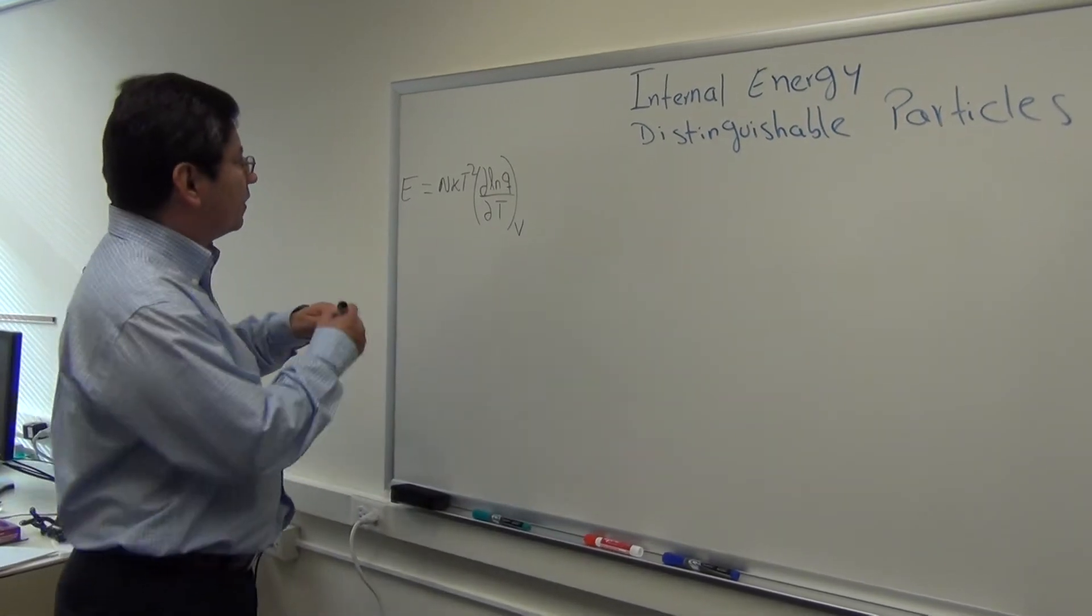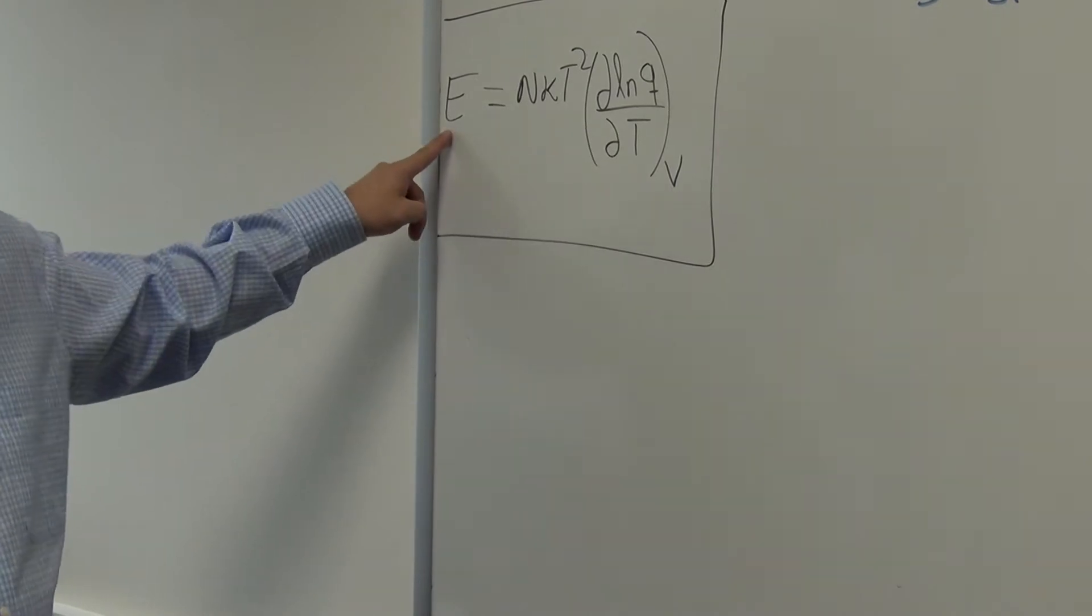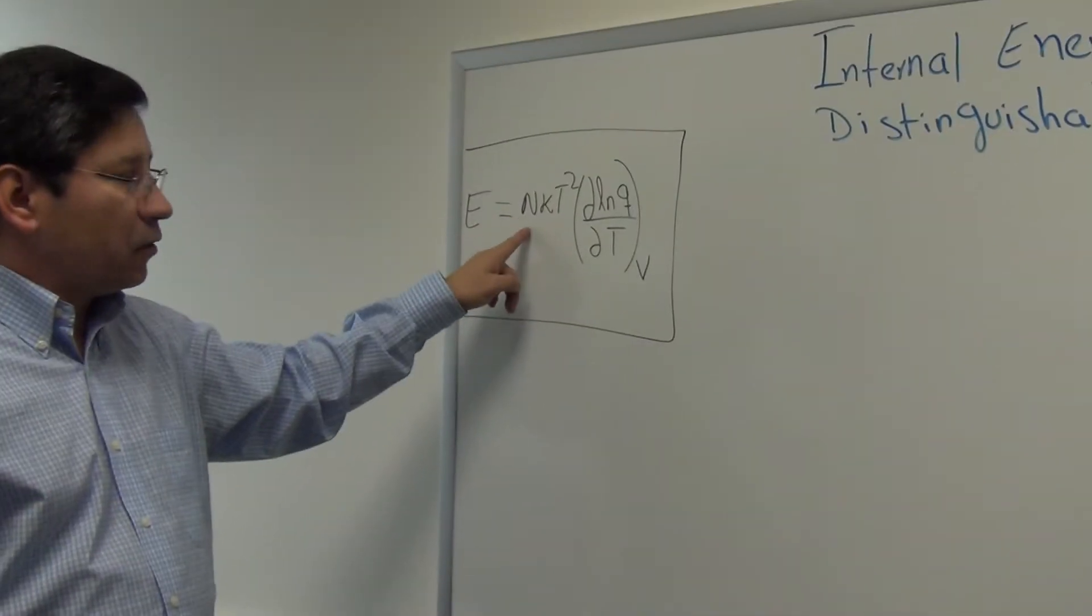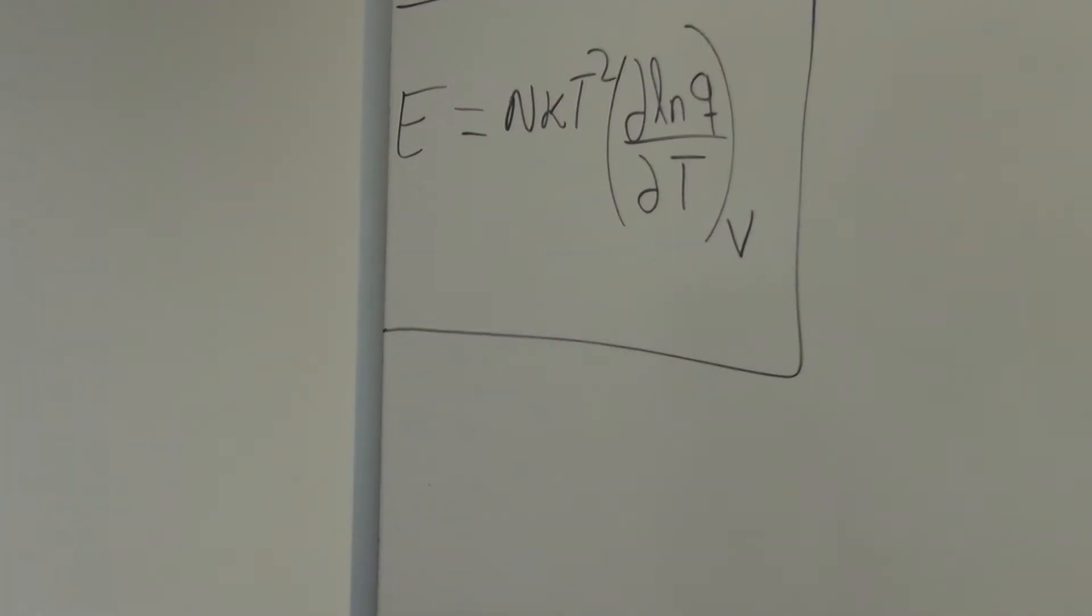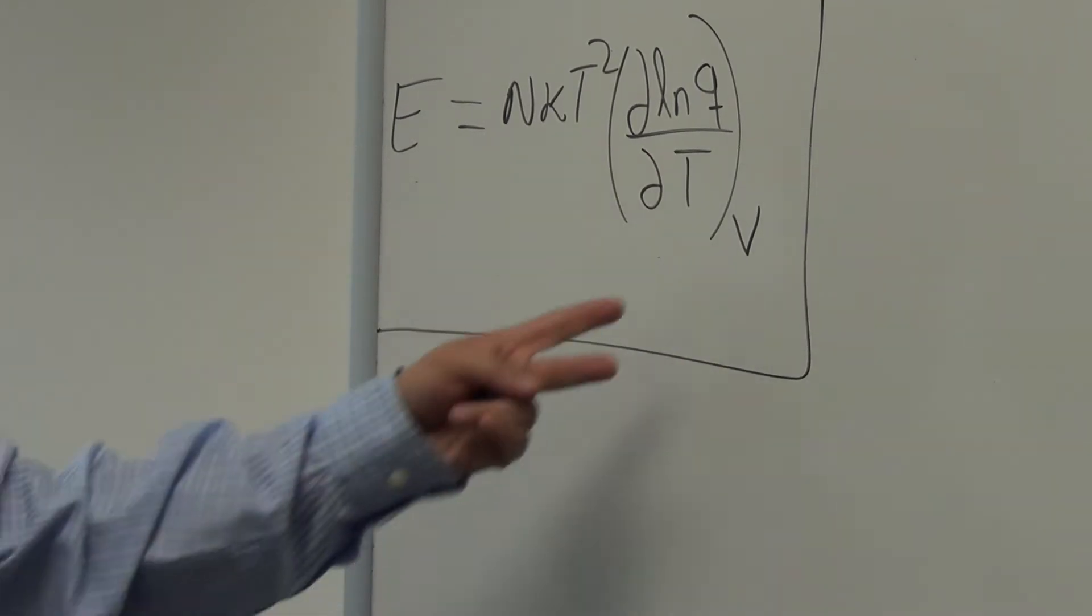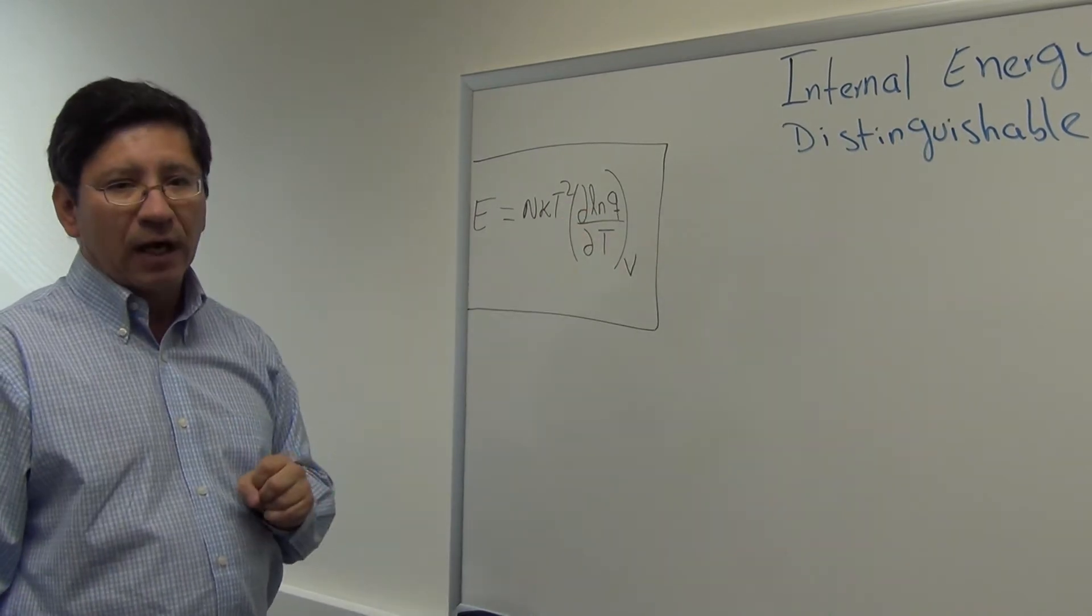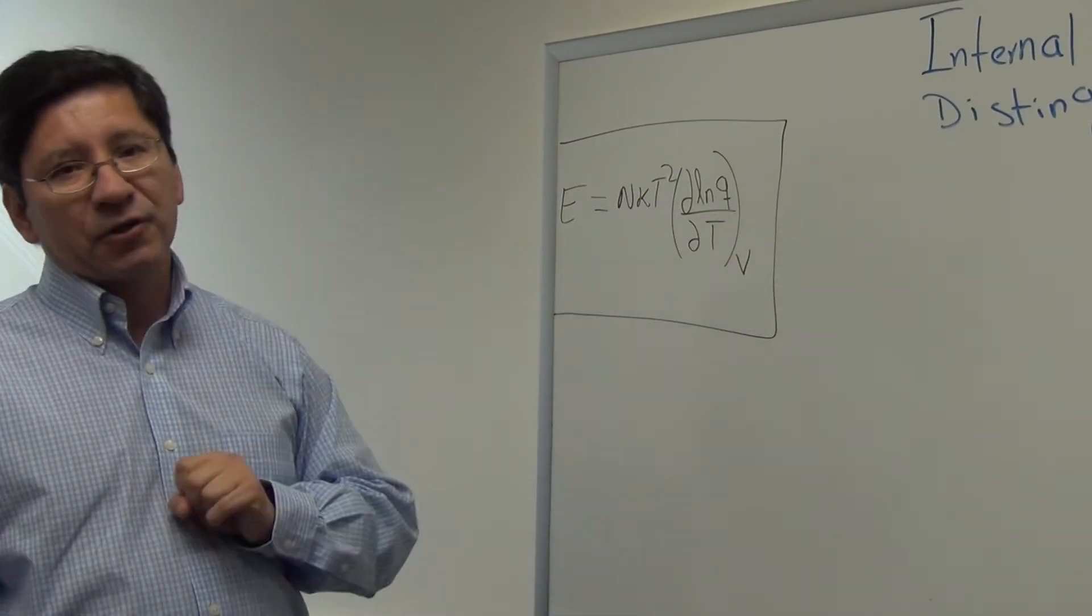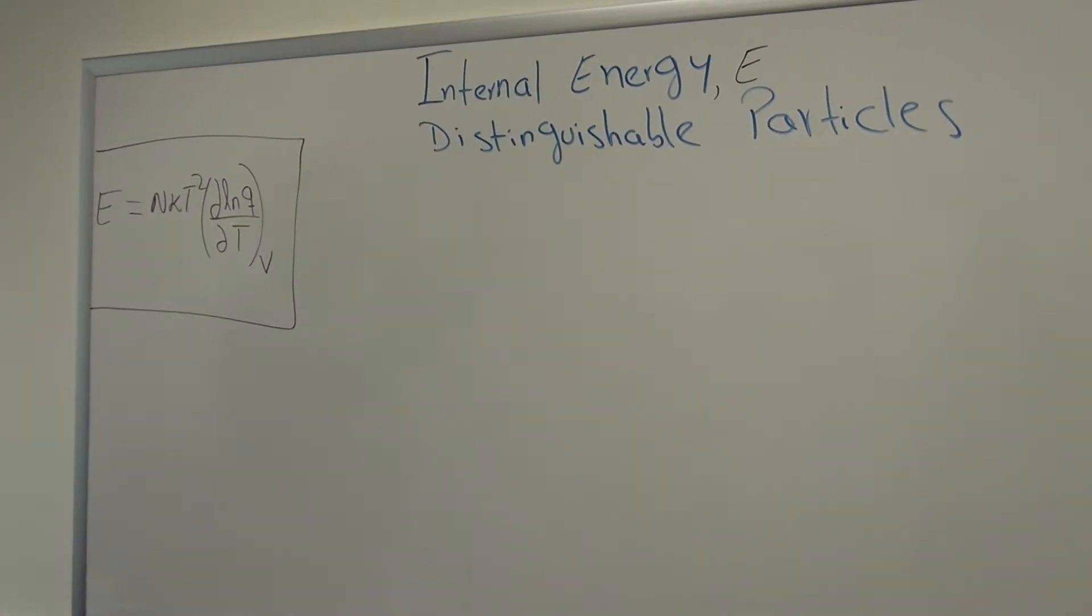We are discussing a particular kind of system, those that are made up of distinguishable particles. The goal in this video clip is to show you how to arrive at an expression for that internal energy in terms of the partition function. The final result is given here. So this is what we want to be able to derive. The meaning of this is that the internal energy for distinguishable particles in terms of the partition function is: E equals N, the number of particles, times Boltzmann's constant, temperature squared, and then the derivative of the natural log of Q with respect to temperature at constant volume.